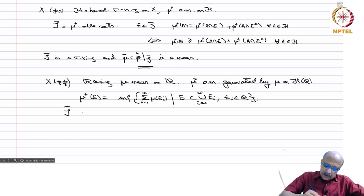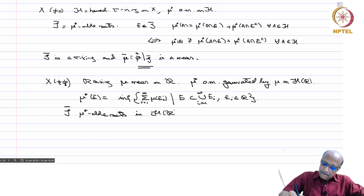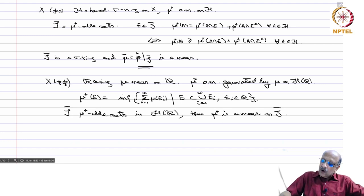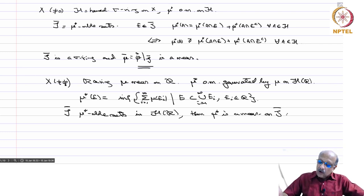Now, if we define S-bar as the mu*-measurable sets in H(R), then mu* is a measure on S-bar. We have now obtained a sigma ring on which we have a measure coming from the original measure. The question is: is this an extension of the original measure or not? That is the question we want to answer, and therefore we have the following proposition.